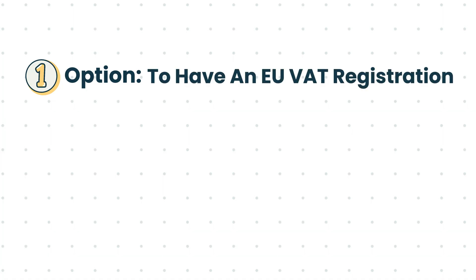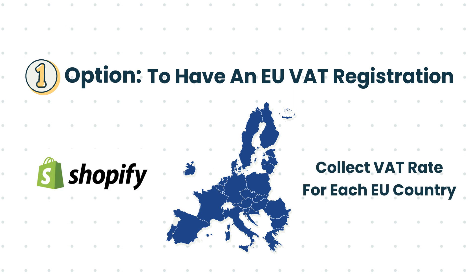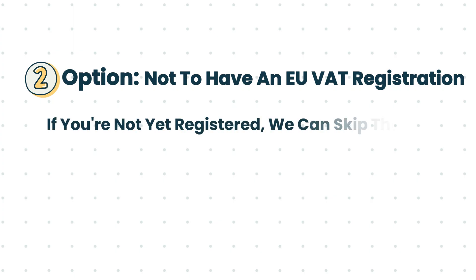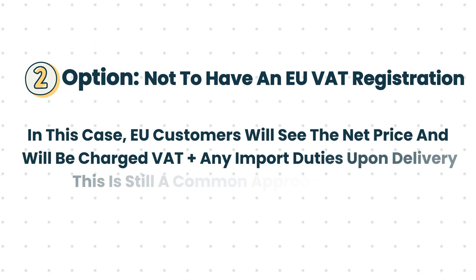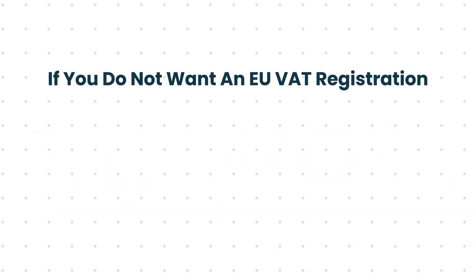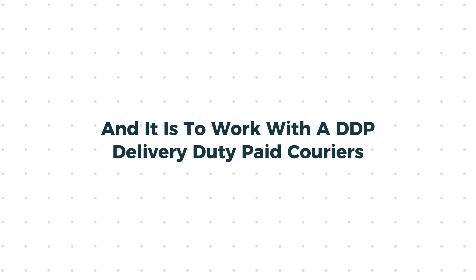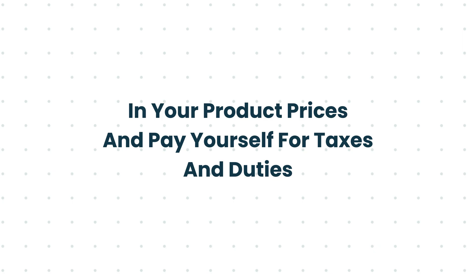The first option for higher-value orders is to have an EU VAT registration. If you are VAT-registered in any EU country, you can set this up in Shopify and collect the correct VAT rate for each EU country. The second option is to have no EU VAT registration — in this case you can skip this setup and EU customers will see the net price and be charged VAT plus import duties upon delivery, which is still a common approach for many international stores especially in early stages. If you don't want EU VAT registration but also don't want customers paying extra duties, you can work with DDP (Delivery Duty Paid) couriers and include VAT in your product prices, paying taxes and duties yourself.